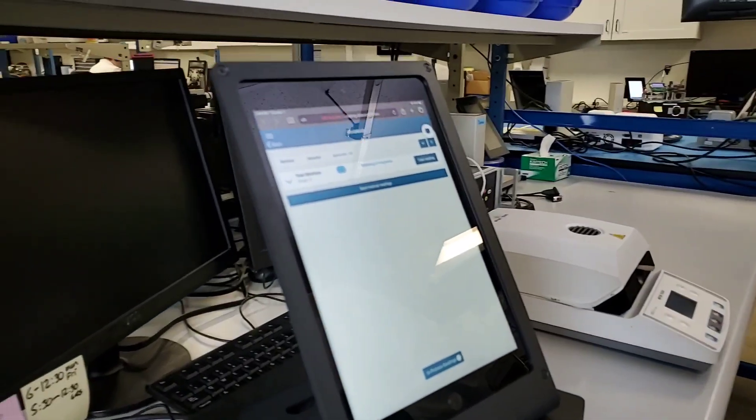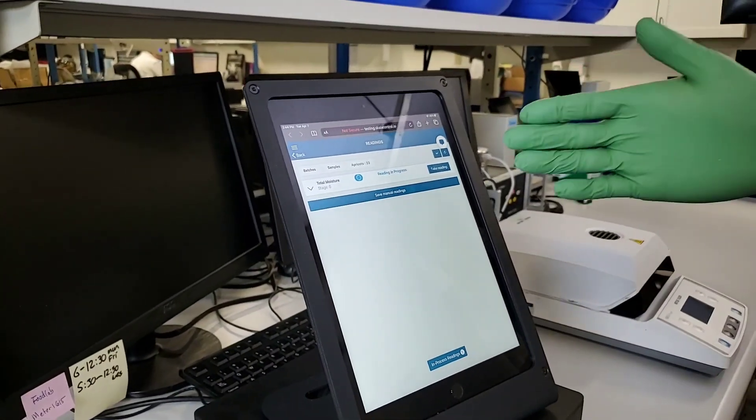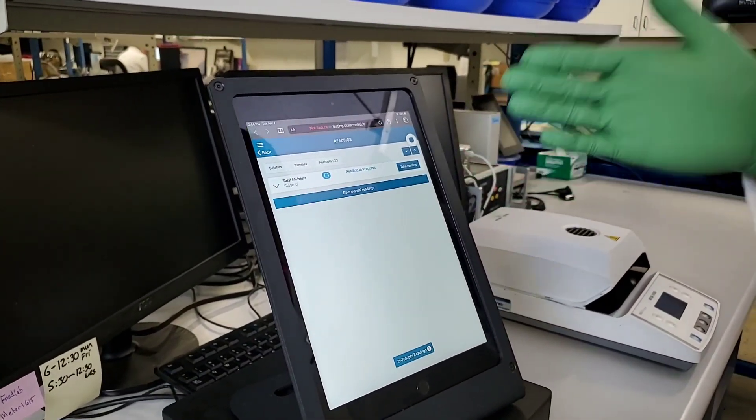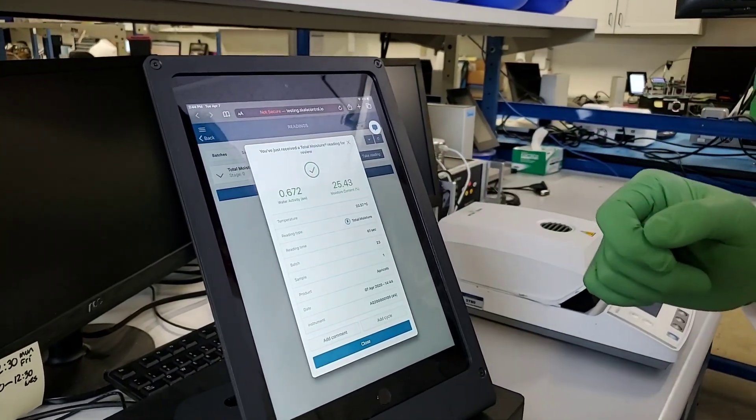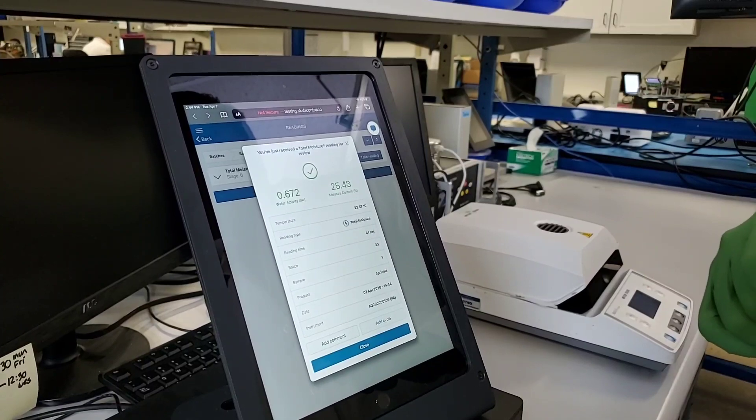As you'll see when this pops up, if it's green that means we are in spec. So 0.672 water activity and 25.4% moisture content—looks like we are in spec, so we can continue moving forward.